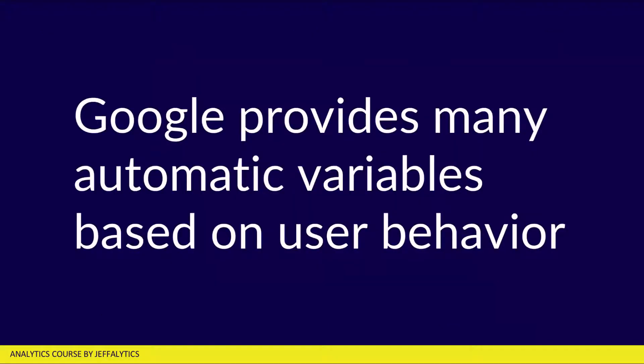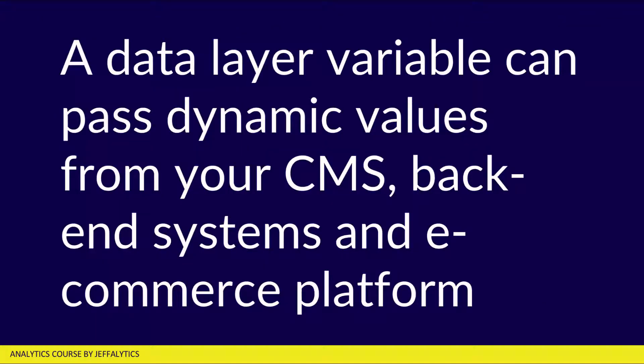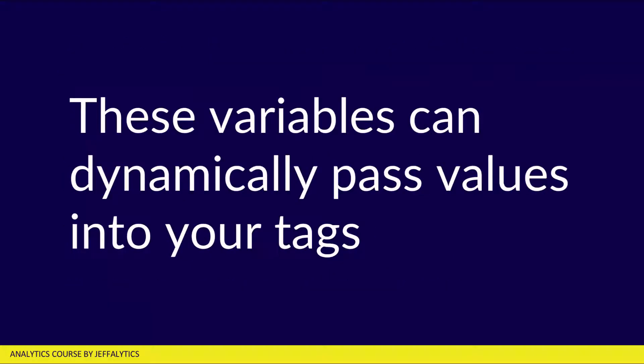Google provides you with many automatic variables based on user behavior. And there's also a way that you can use a data layer to communicate with your website — pushing in data from your own website into Google Tag Manager that you can use to make your tags more meaningful. The value proposition of a data layer variable is that it can pass dynamic values from your content management system, your backend systems, or your e-commerce platform into Google Tag Manager, and then these variables can dynamically pass values into your tags. This works really nicely because now you're creating one tag template that can take on any number of values based on what's happening on your website.